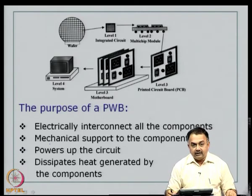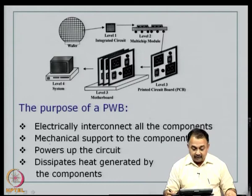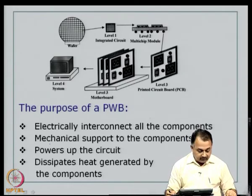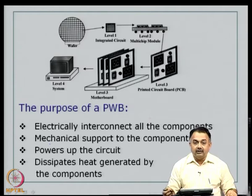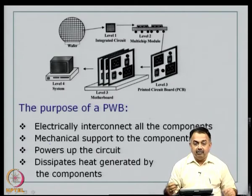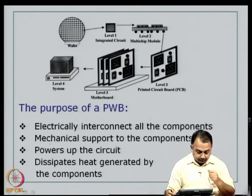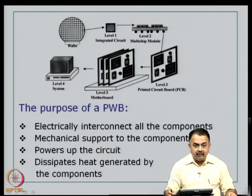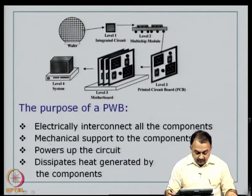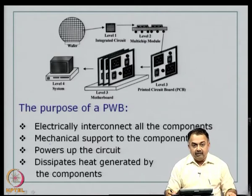We have focused a lot in this course on printed wiring boards, which is the second major level of packaging, because today printed wiring boards themselves can be called systems as they perform system functions. It could be analog, digital, mixed signal, or high bandwidth. There are other issues like EMI and EMC built on the substrate, making it compatible with various operational frequencies. The purpose of a printed wiring board is to electrically interconnect all the components, provide mechanical support, power up the circuit, and dissipate heat generated by the components. Accordingly, materials have to be selected.